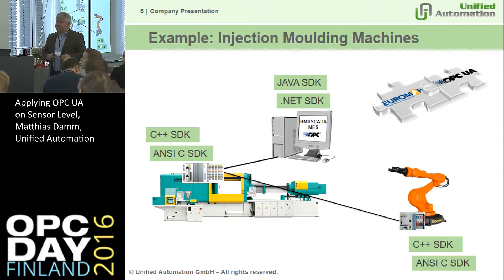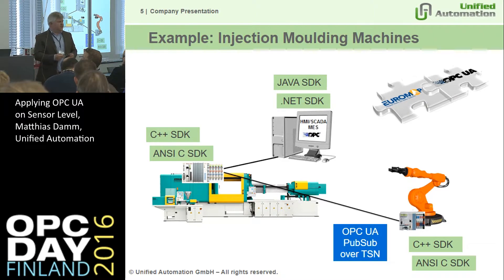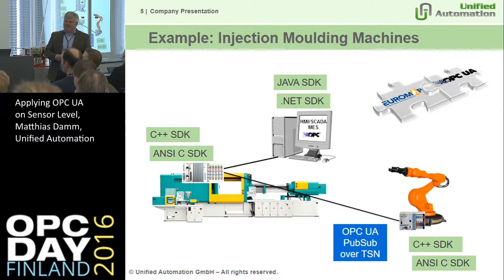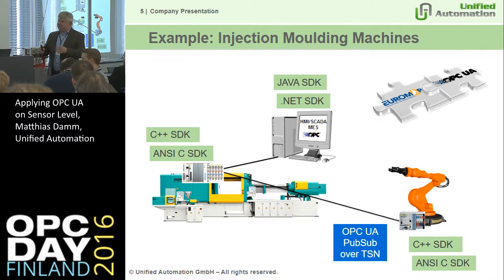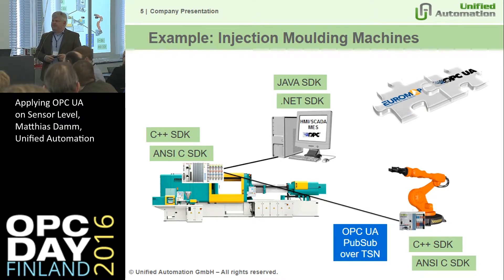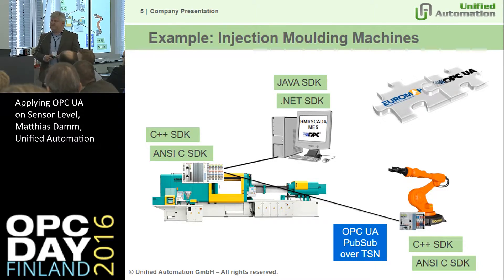OPC UA PubSub over TSN is also added to this picture, as there are real-time requirements — if a robot is moving, you want it based on correct information from the machine, or vice versa. This is the first companion specification that truly relies on OPC UA PubSub over TSN. This is a typical setup we see across different machine types, where the external interface is moving to OPC UA, driven by broad support from PLC vendors — a win-win for everybody.